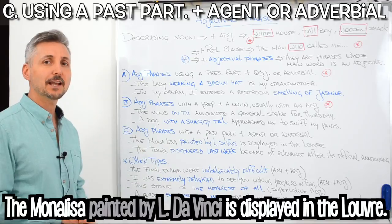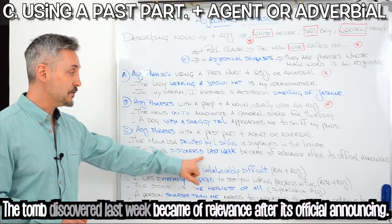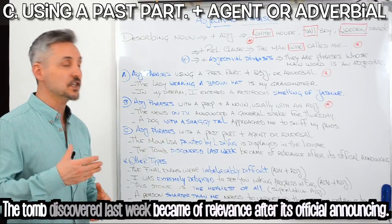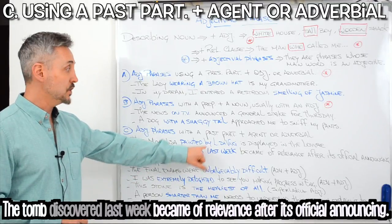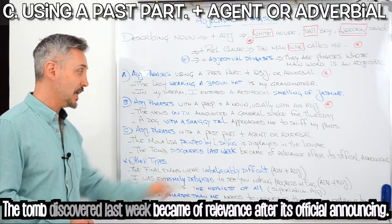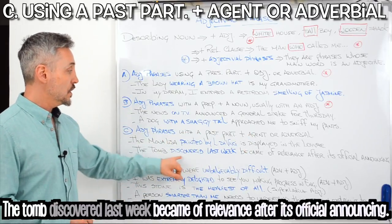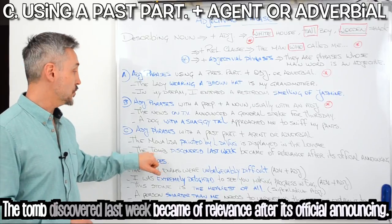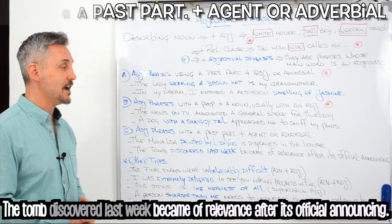Let's take a look at another example: The tomb discovered last week became of relevance after its official announcing. So, we have discovered, which is a past participle, and then plus agent or adverbial — last week. So, it describes the tomb: the tomb discovered last week became of relevance after its official announcing.